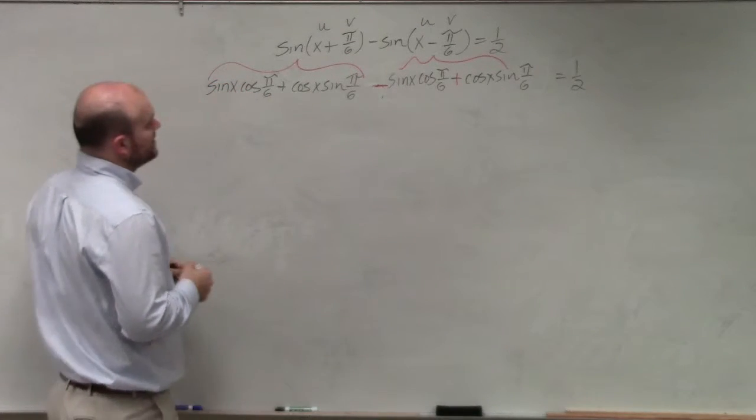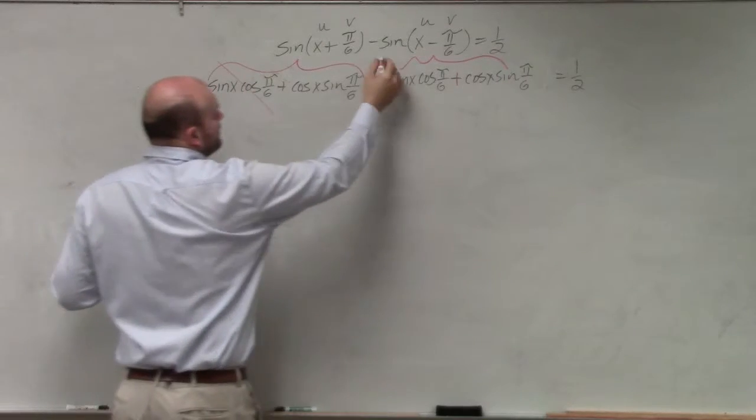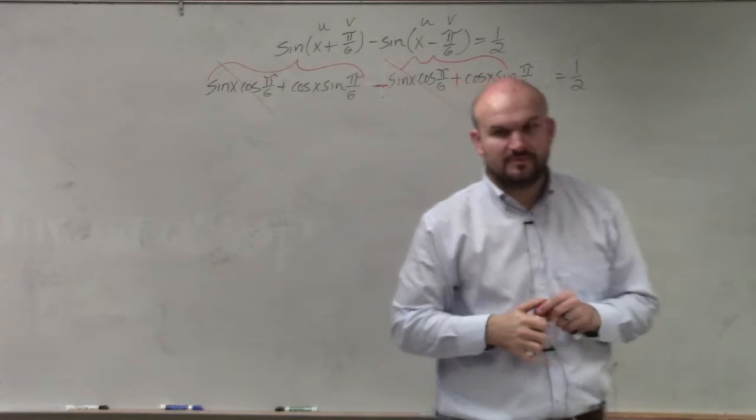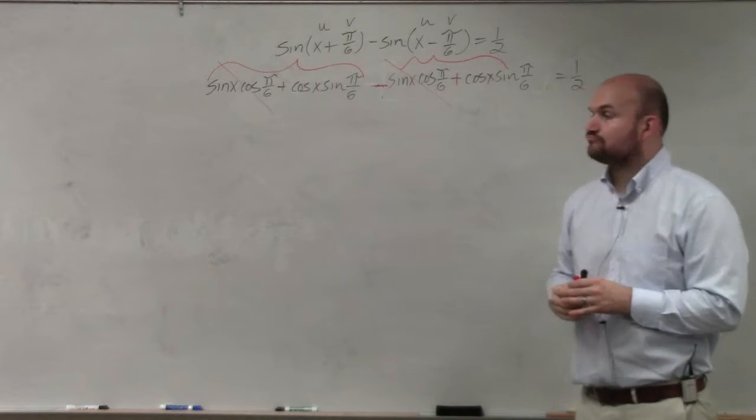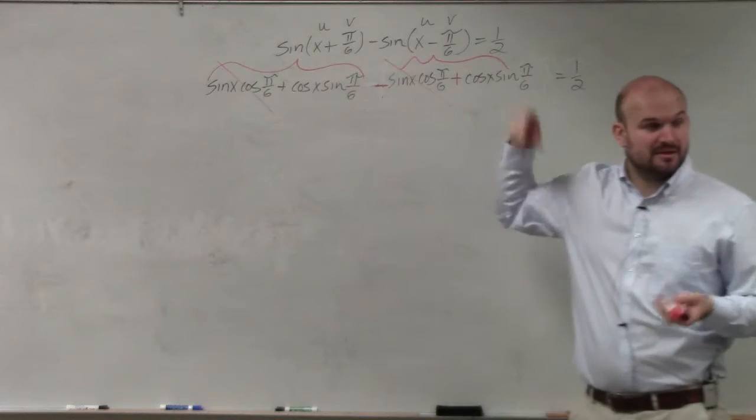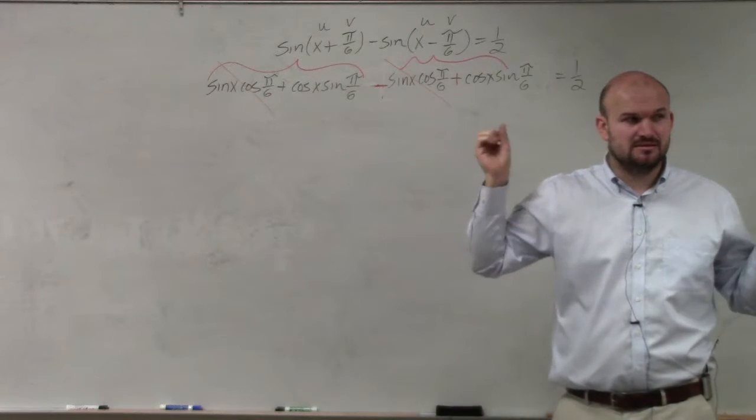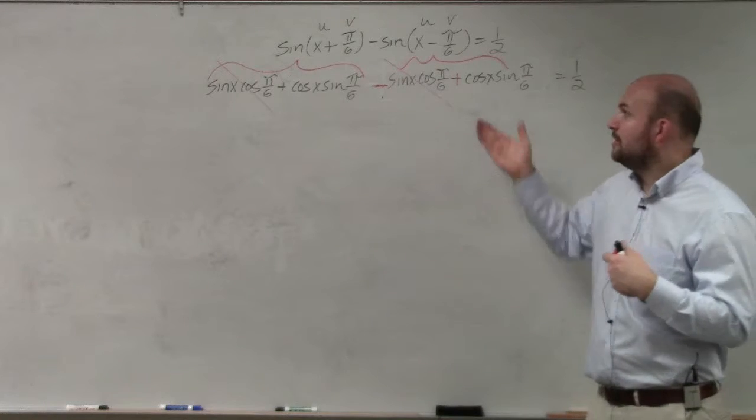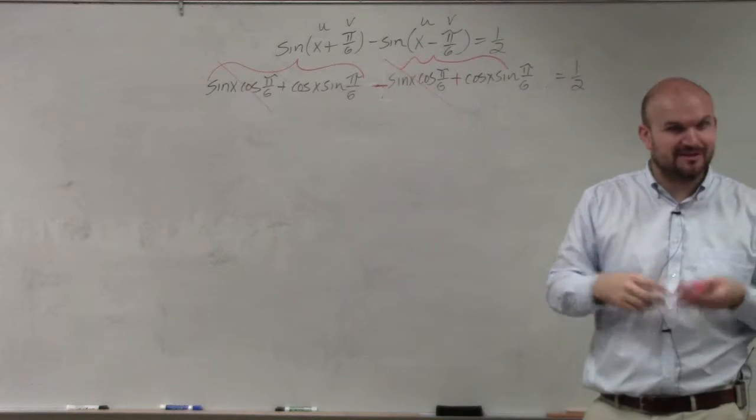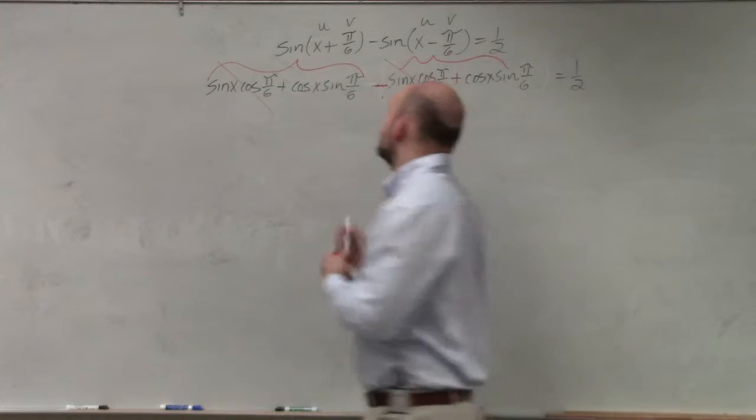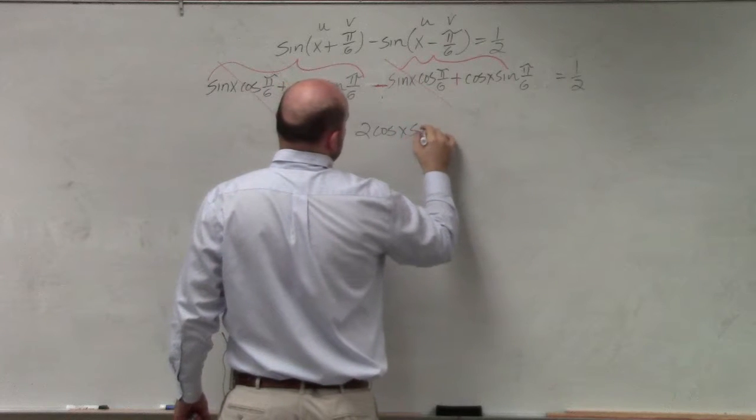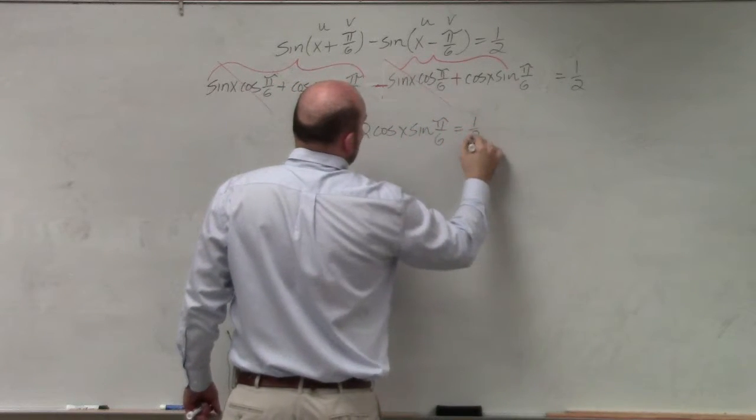Now what I notice here is these two terms are exactly the same - one's positive and one's negative. And then over here these two terms are exactly the same. What's x plus x? 2x. So cosine x sine of pi over 6 plus cosine of x sine of pi over 6 would be 2 cosine of x sine of pi over 6 equals 1 half.